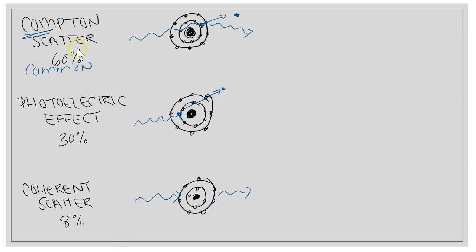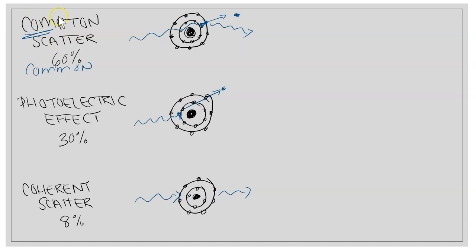There are different types of scatter radiation: Compton scatter, coherent scatter, and the photoelectric effect. Compton scatter occurs when a photon hits an electron on the outer shell, kicks it out (ionization), and then the remaining photon scatters elsewhere. This happens 60% of the time — it's the most common type. Compton sounds like 'common,' which is a helpful memory aid.